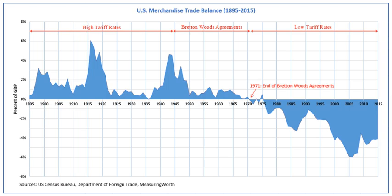The IBRD had an authorized capitalization of $10 billion and was expected to make loans of its own funds, to underwrite private loans, and to issue securities to raise new funds to make possible a speedy post-war recovery. The IBRD was to be a specialized agency of the United Nations, charged with making loans for economic development purposes.